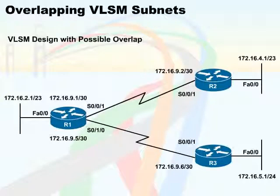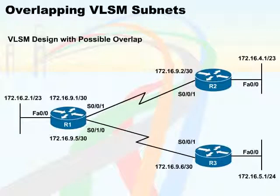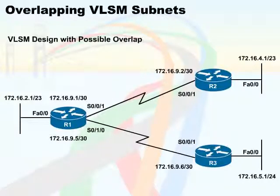Let's take a look at the diagram on the screen. Here's a single Class B network, 172.16.0.0. When using a VLSM design with three different masks — slash 24, slash 23, and slash 30 — how can you determine whether or not overlapping subnets exist from this diagram?